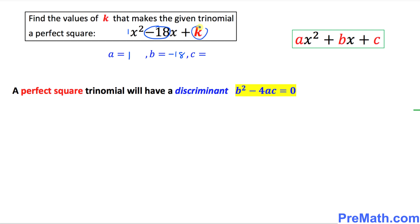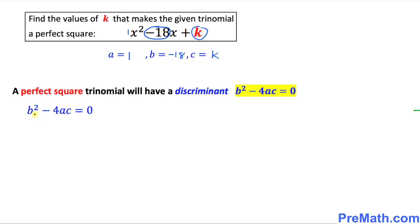And c is k. So let's go ahead and calculate the value of b² - 4ac. And we have a, b, and c right up here. So our b is negative 18 squared minus 4 times a is 1 and c is k equal to 0. And the square of negative 18 is 324 and this simply becomes minus 4k equal to 0.